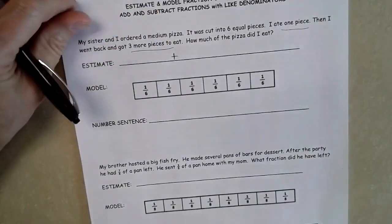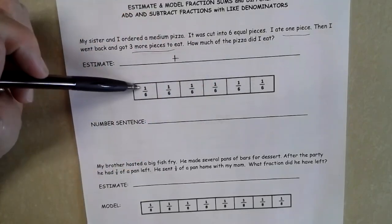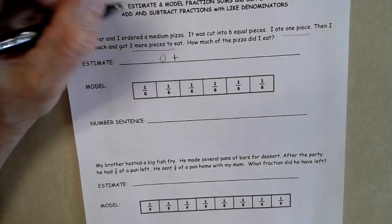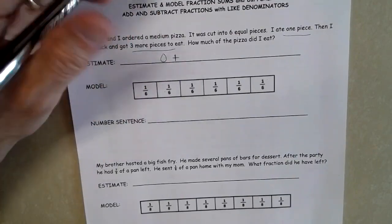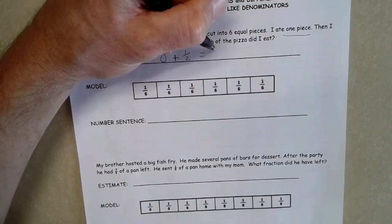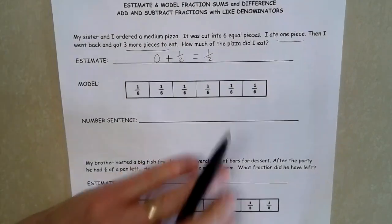So if I want to estimate this, I know that one out of six, when I'm estimating, that's very close to zero. So in three out of six pieces is really close to half so that I know when my estimate, I have about half of the pizza that I ate.